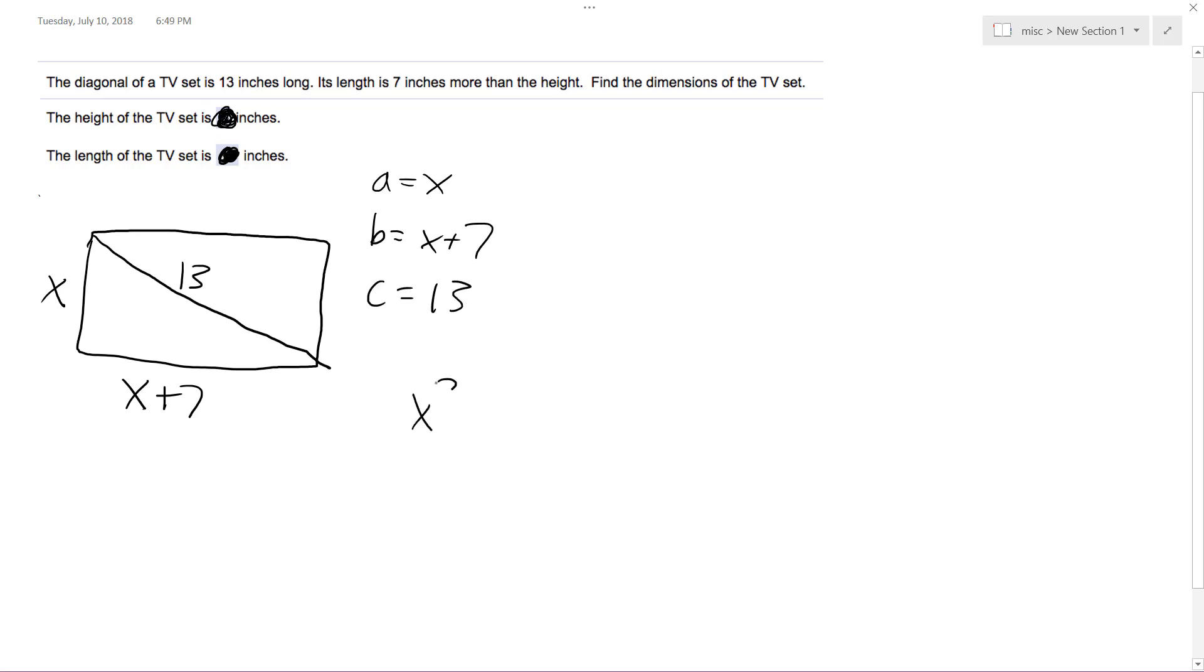So we have x squared plus x plus 7 squared is equal to 13 squared. So we have x squared plus x squared plus 14x plus 49 equals 169 minus 49 minus,